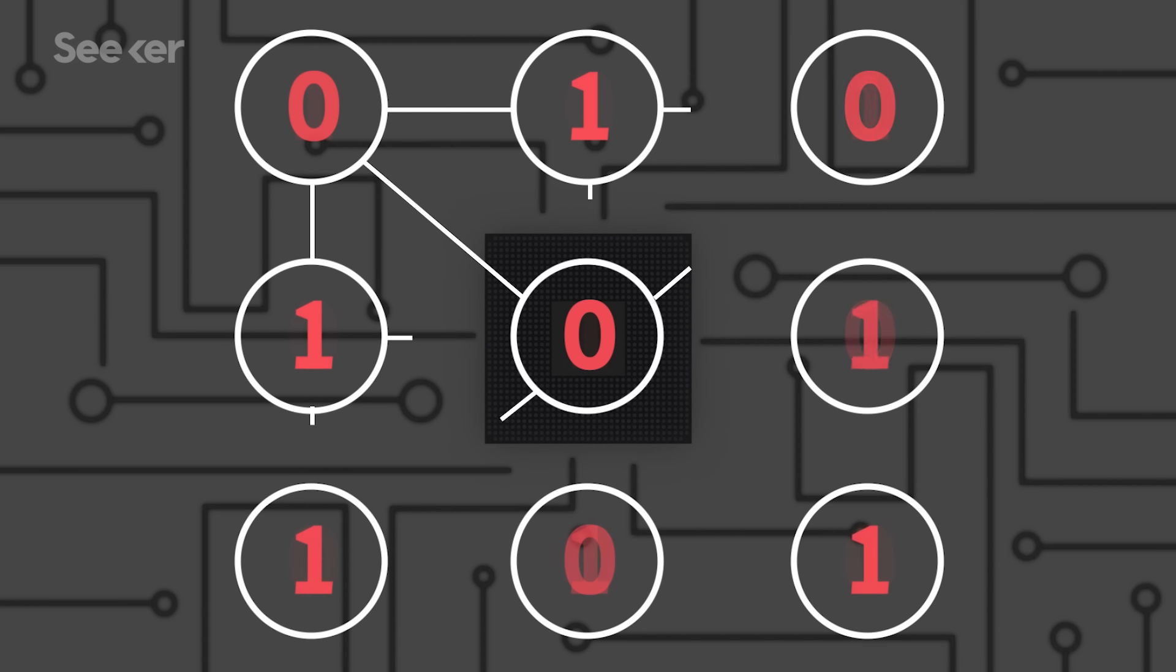And if you flip this qubit around, this one over here will feel it. And if you do that in a controlled way, you can move lots and lots of information around within your quantum mechanical system really efficiently.